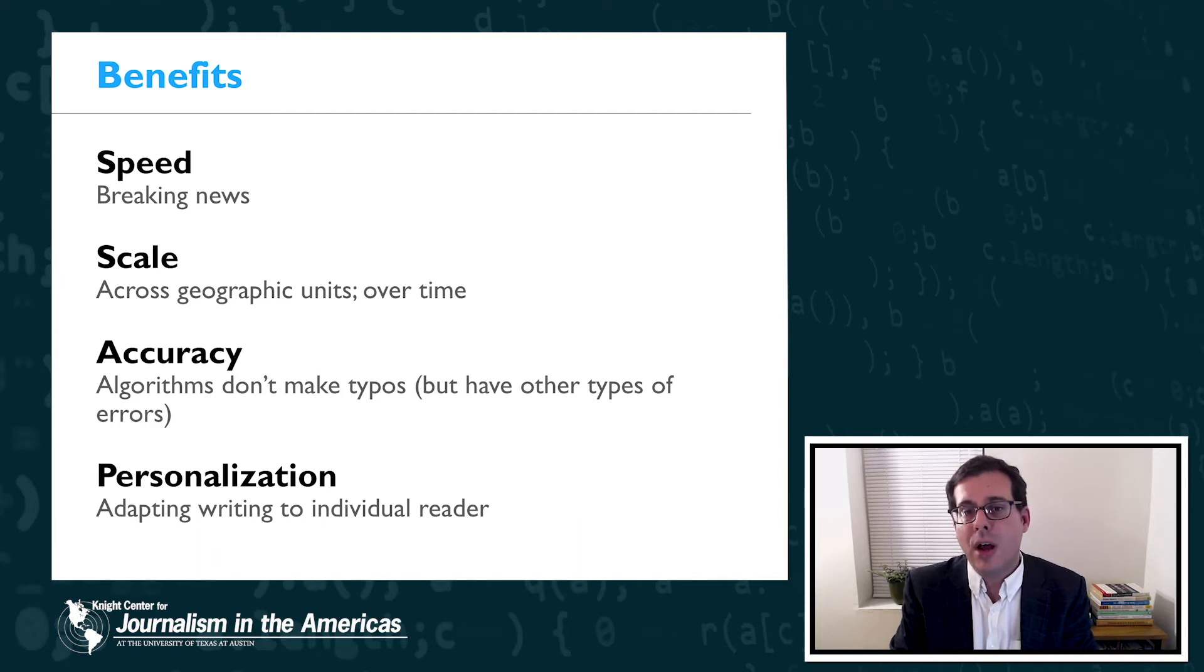Automation also offers the benefit of scale. Content can be scaled up across different geographies or over time so that the same type of event can be covered over and over again with minimal additional effort. Scale across time also creates new opportunities because it allows for a consistency of coverage that might not otherwise have been possible.